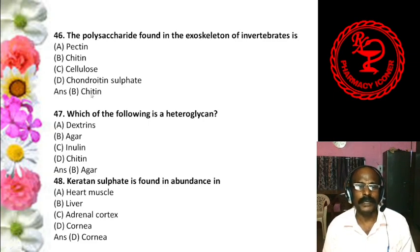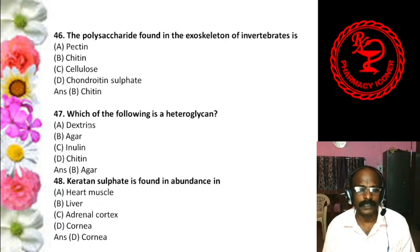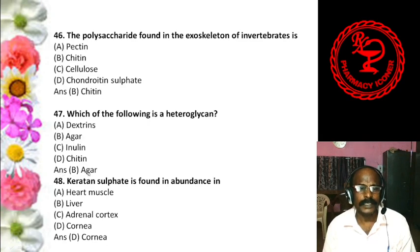Question 9: Erythromycin contains — A. Trimethyl aminosugar, B. Sterol and sugar, C. Glycerin sugar, D. Dimethyl aminosugar. The answer is D, dimethyl aminosugar. Erythromycin contains dimethyl aminosugar.